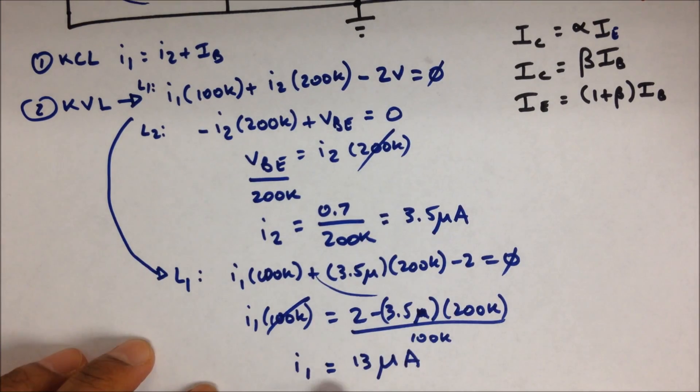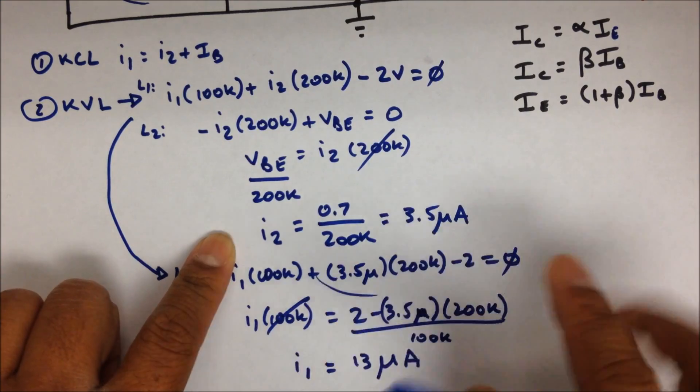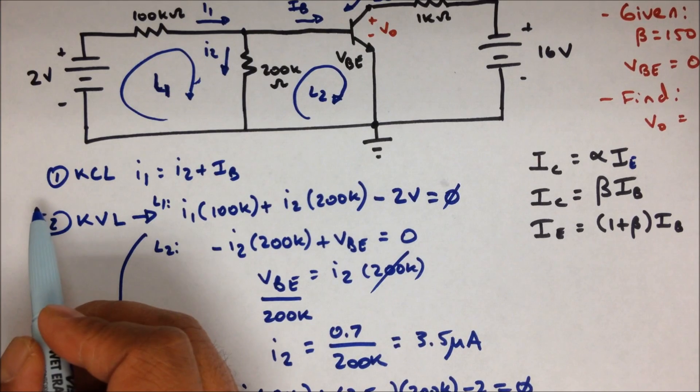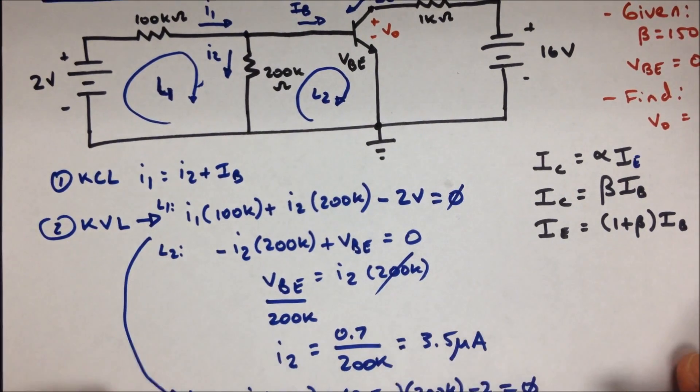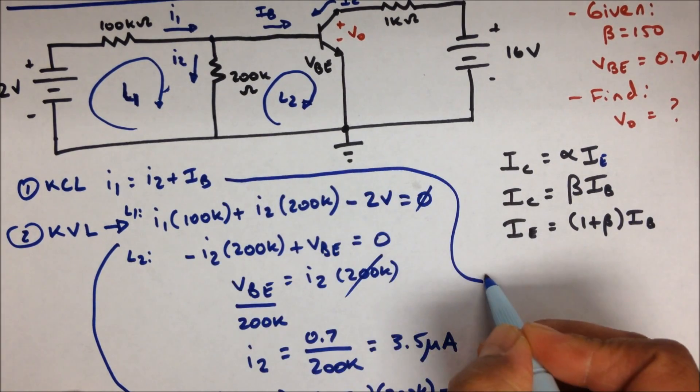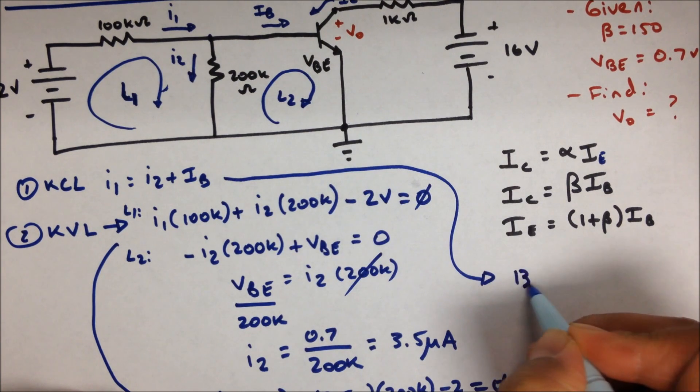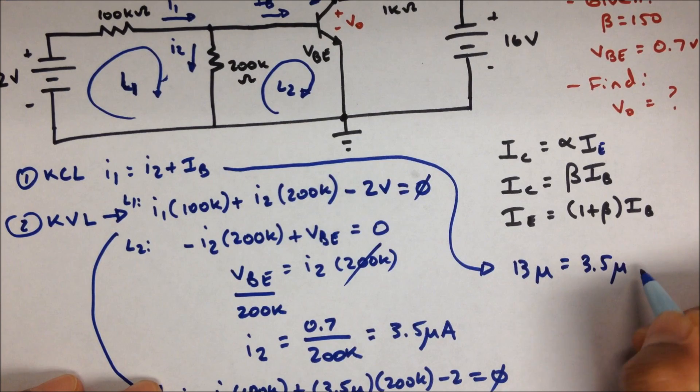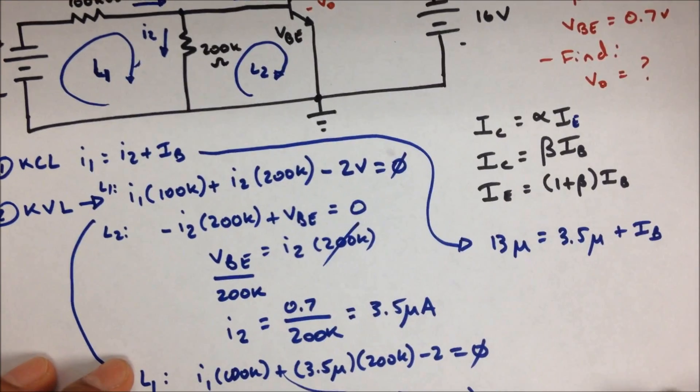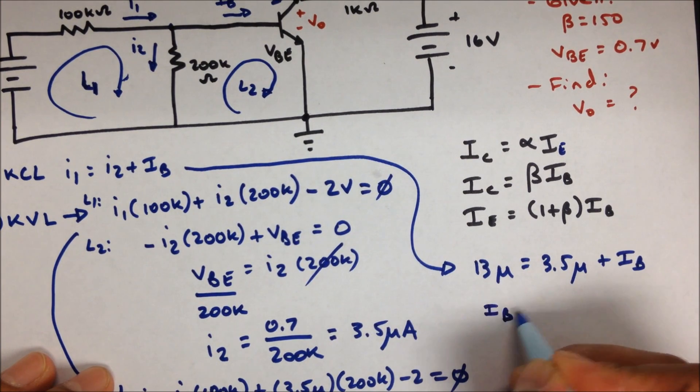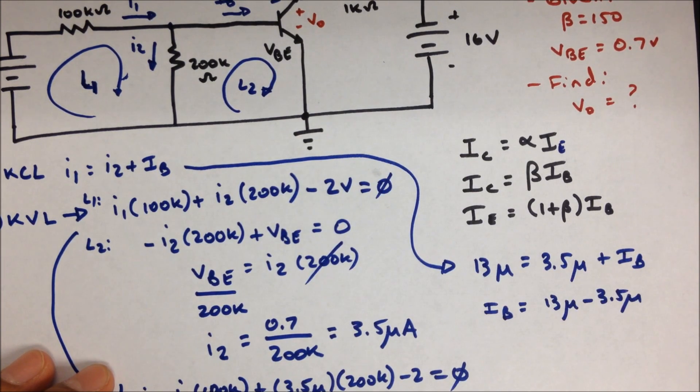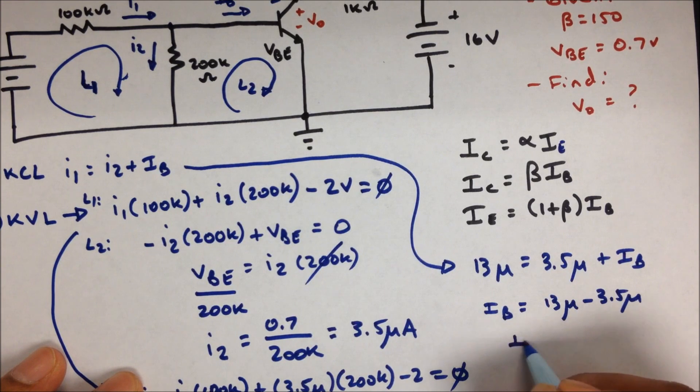So we have I1, we have I2, and we know the relationship between I1, I2, and IB. Let's use this KCL equation. I1, we just found out, is 13 microamps equals I2, which we solved to be 3.5 microamps plus IB. Let's solve for IB. IB equals 13 micro minus 3.5 micro. So IB equals 9.5 microamps.